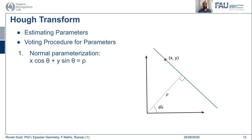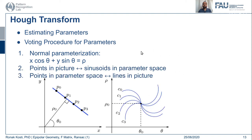In the parameter space of θ and ρ, this line will have a single point — so with ρ on one axis and θ on the other, the line is represented by a single point there. Points in the image picture can be represented in that parameter space.